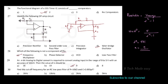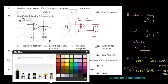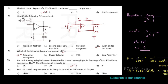Cut-off frequency: the equation is f equals 1 divided by (2πRC). Direct substitution gives 1 divided by (2π × 10 × 10³ × 0.003 × 10⁻⁶), which equals approximately 5307.85 Hz, approximately equal to 5 kHz. Option D is the correct answer.